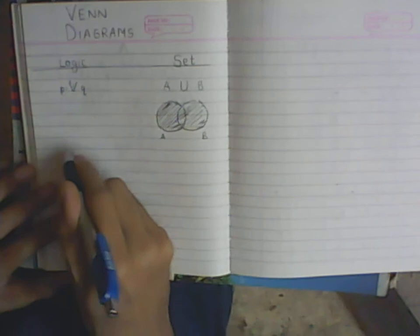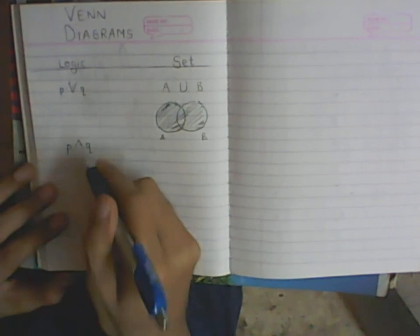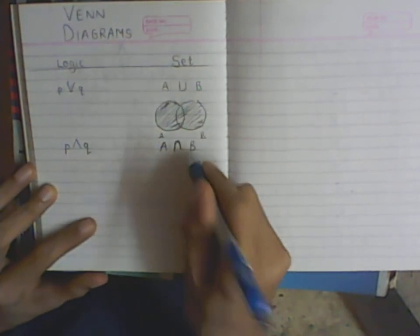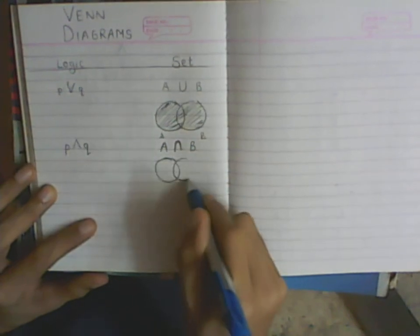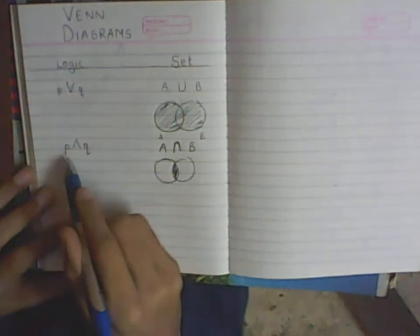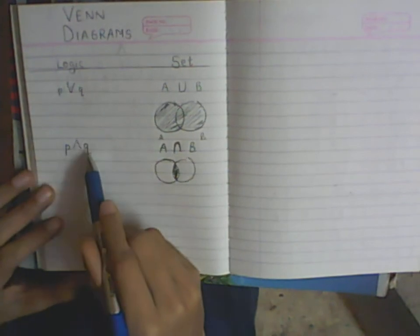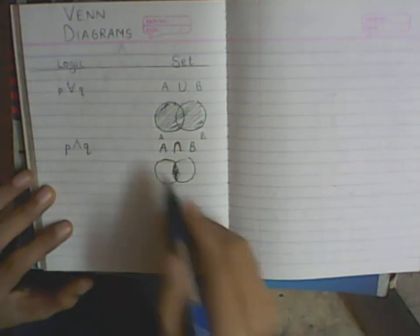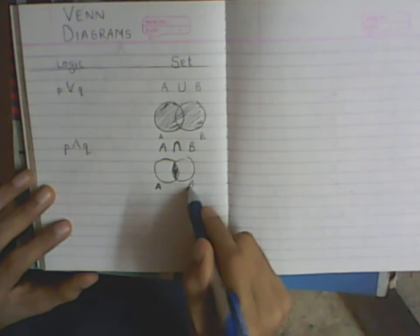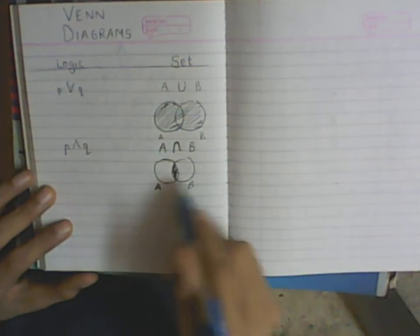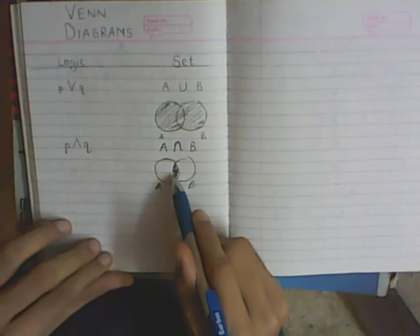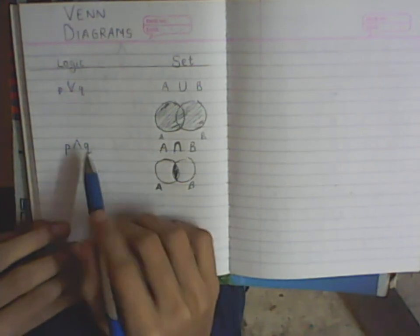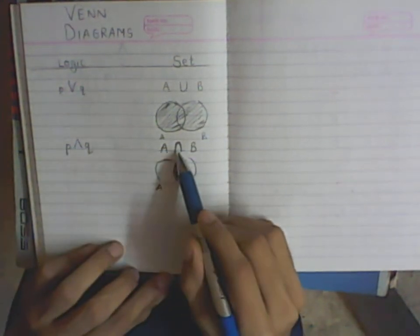Similarly, the logical connective P and Q is very much similar to the set operation A intersection B, which includes the common part. So if A represents 'I play football' and B represents 'I play basketball,' the intersection is the common region — the scenario where I play both football and basketball. So P and Q is very much similar to the intersection of A and B.